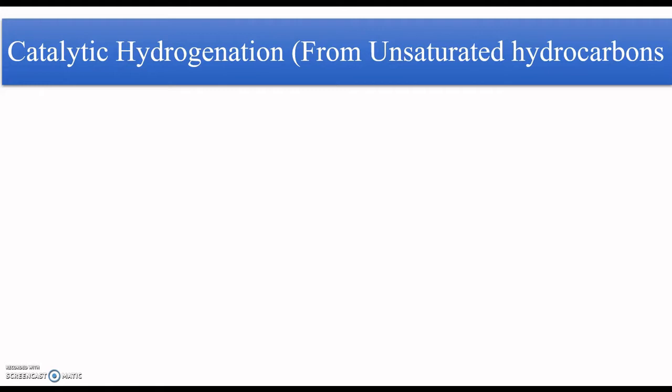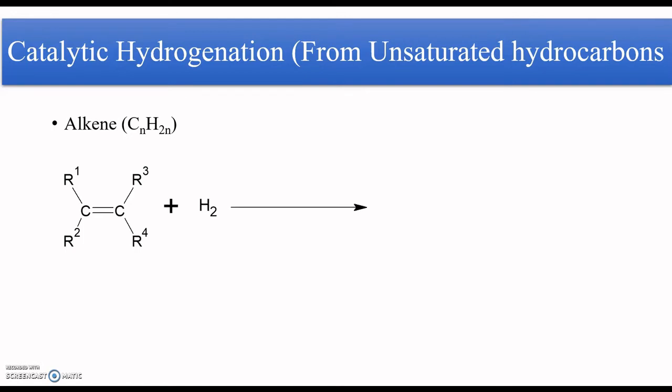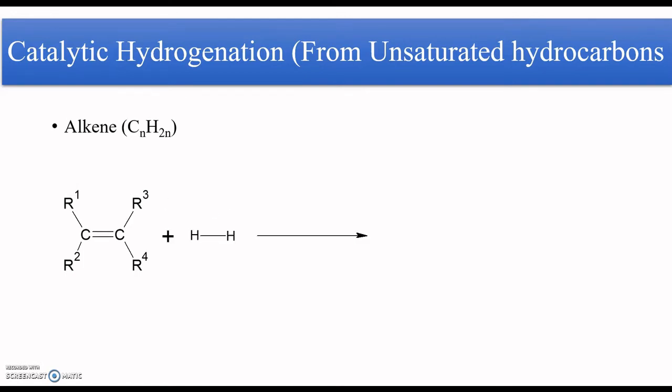Unsaturated hydrocarbons are compounds containing a carbon-carbon double bond or a carbon-carbon triple bond. Let us start with the first compound, that is alkene. Alkenes are compounds containing a carbon-carbon double bond and are generally represented by the formula CnH2n.